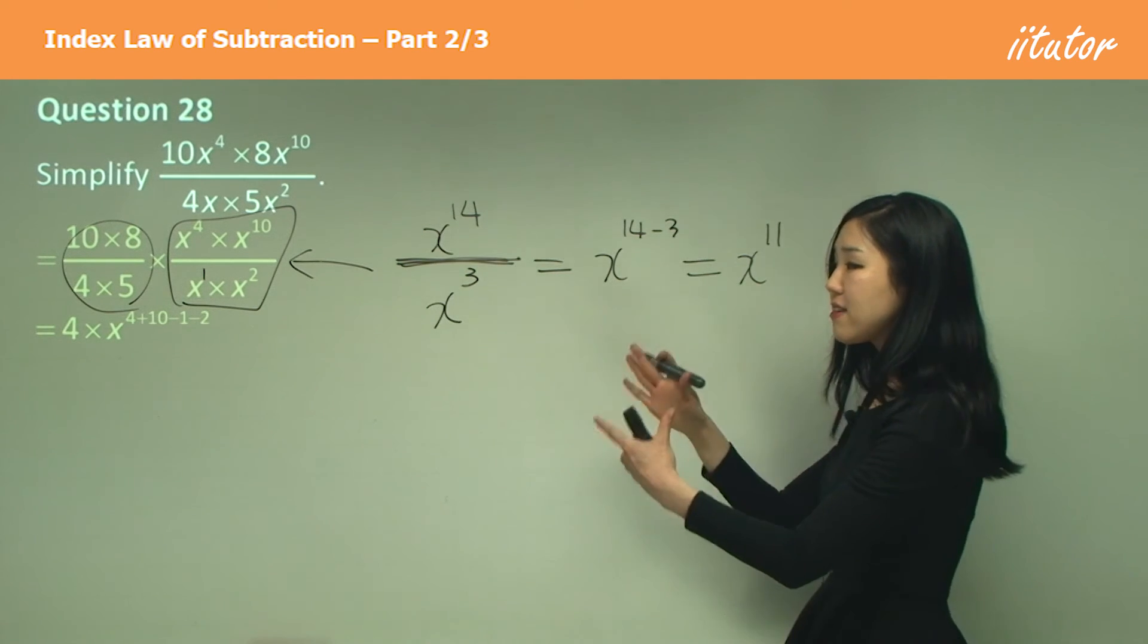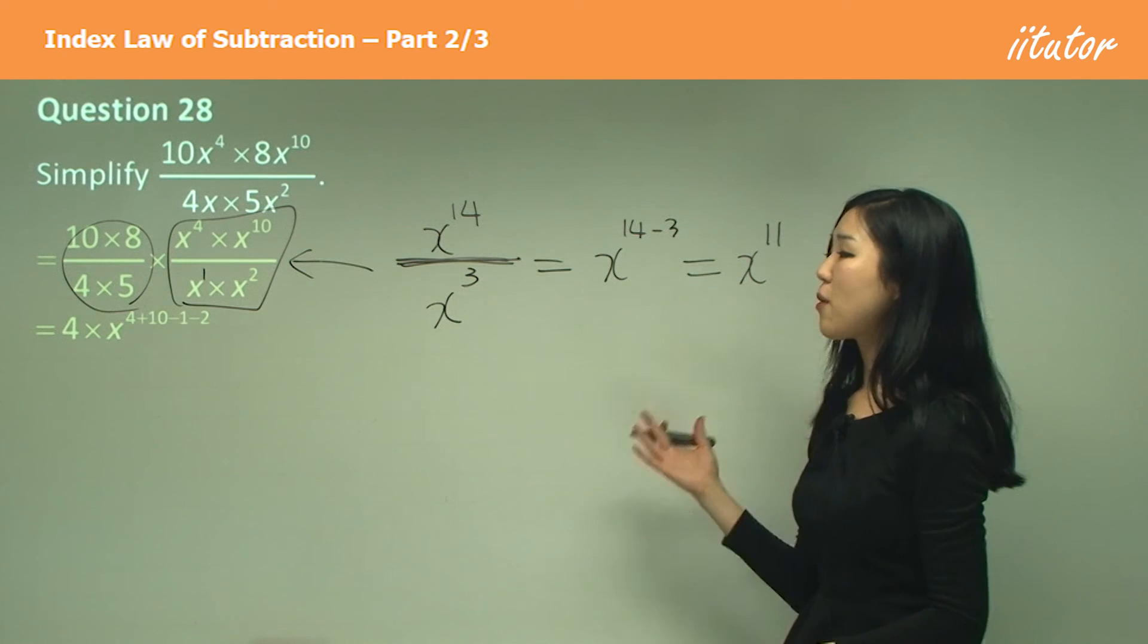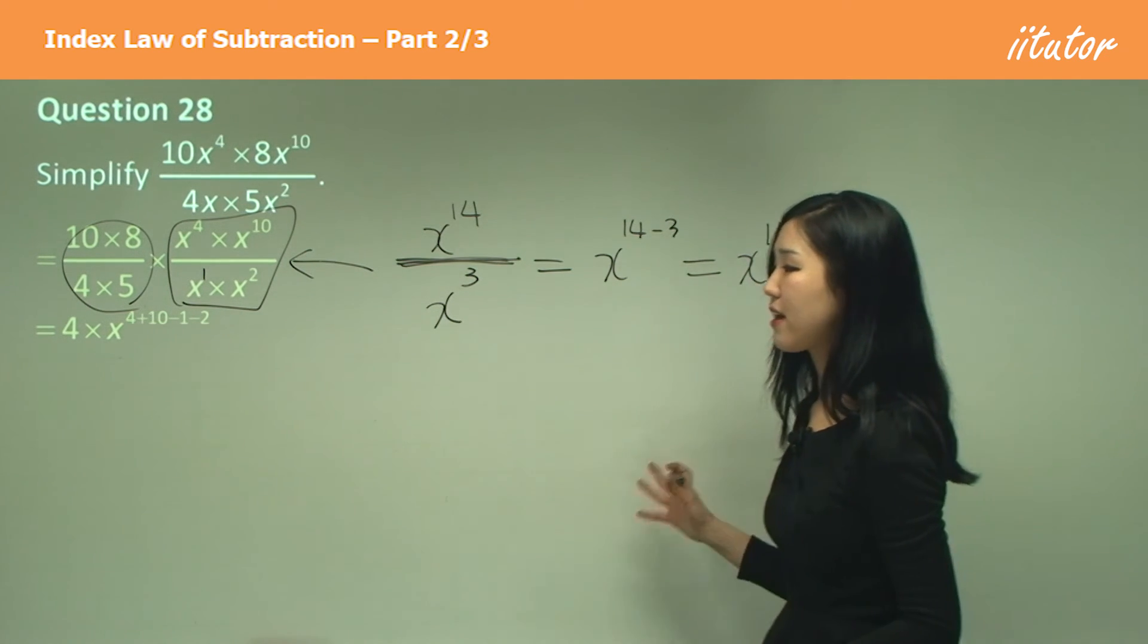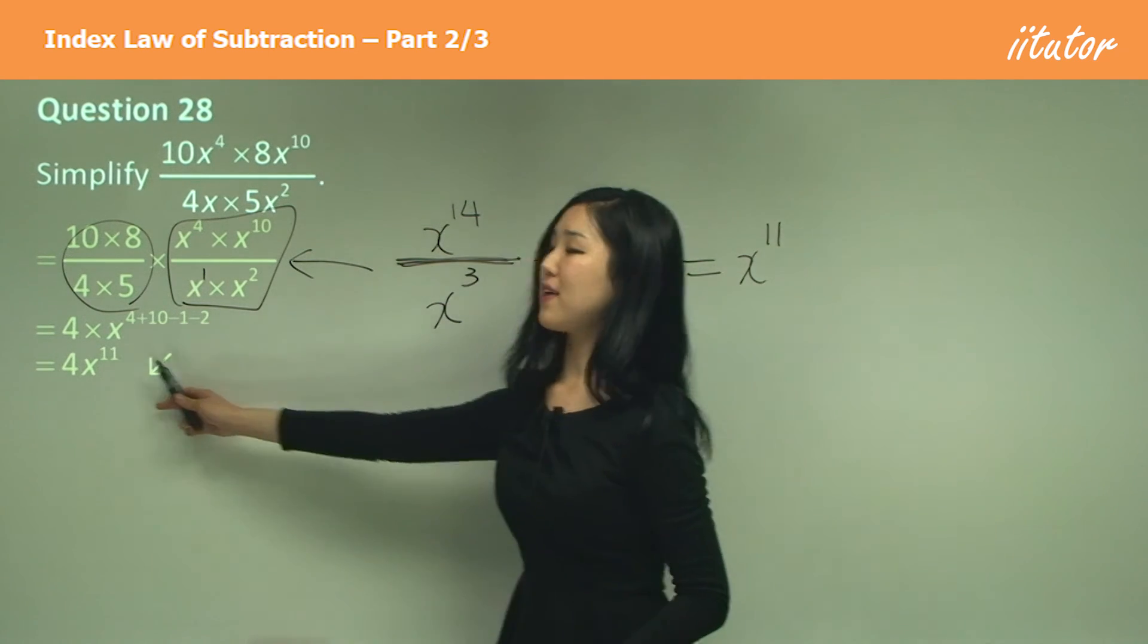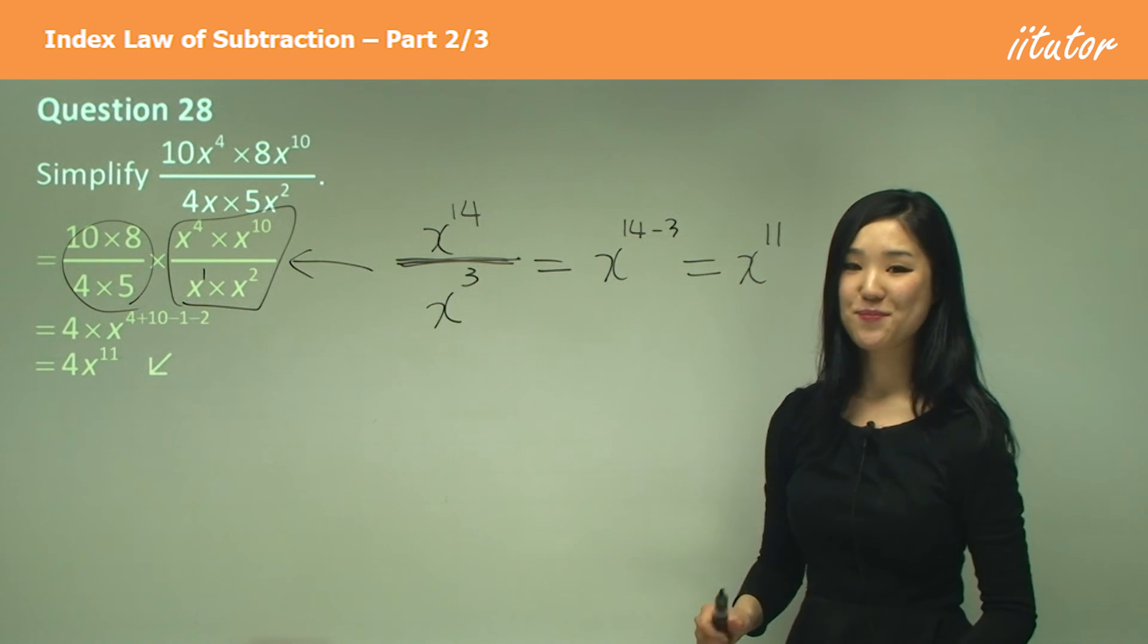That's how you can simplify it. If you like to go step by step, I personally like this way as well because it stops me from making silly mistakes. See how we get 11 as well. We get the same answer, x to the power of 11. Just stick your 4 out the front.